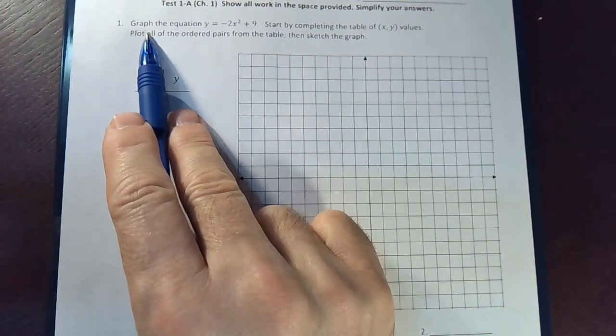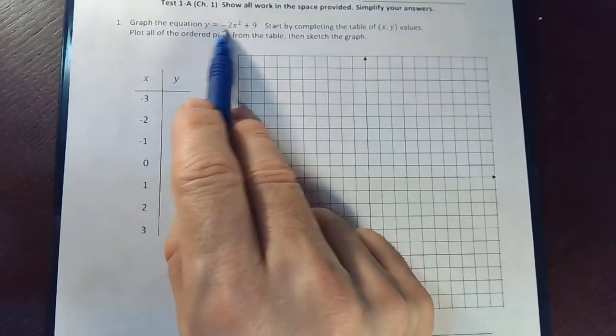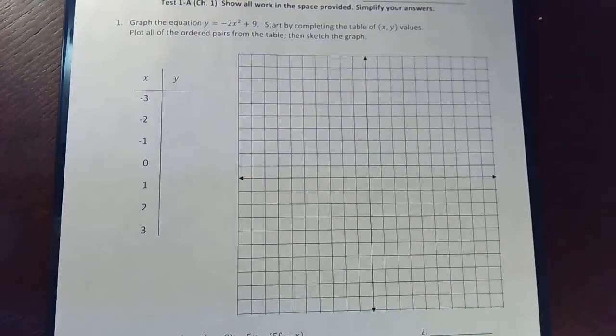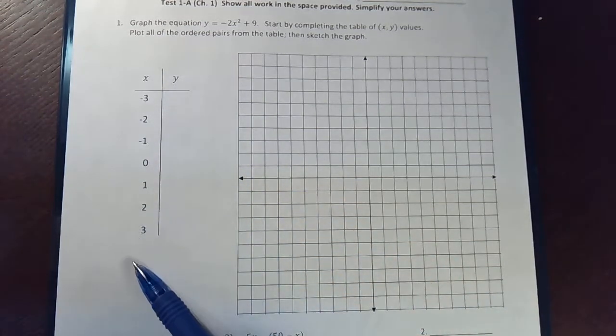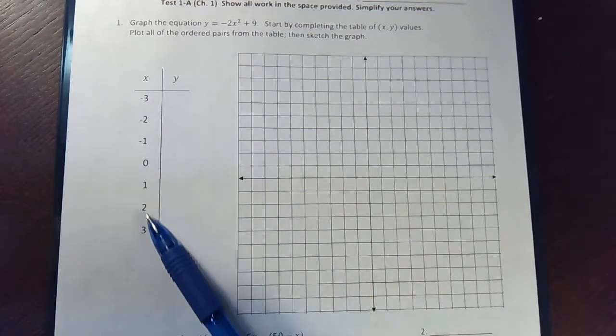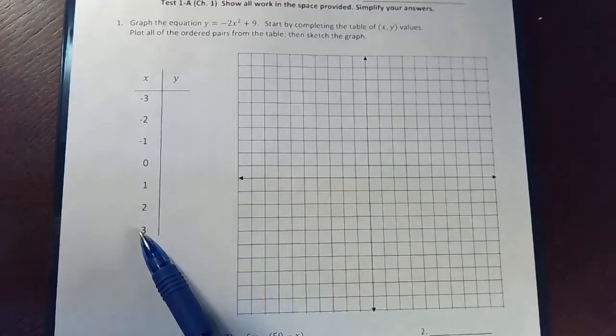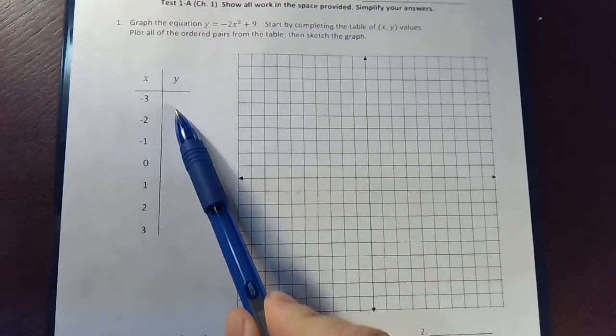All right, all we have to do for this first one is graph this equation: y equals negative 2x squared plus 9. So we're going to use the point plotting method, which basically means you choose a bunch of values of x, which will go from negative 3 up to 3, the integers, and we'll find the corresponding y values.